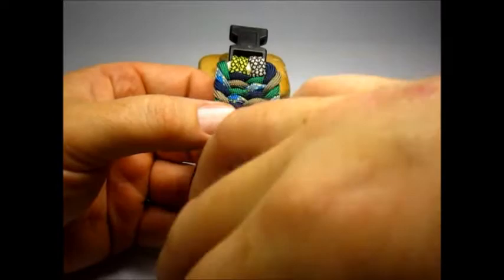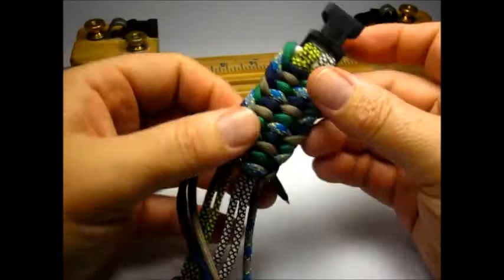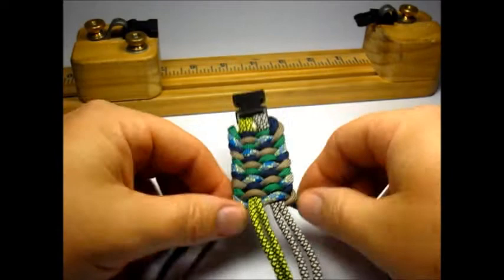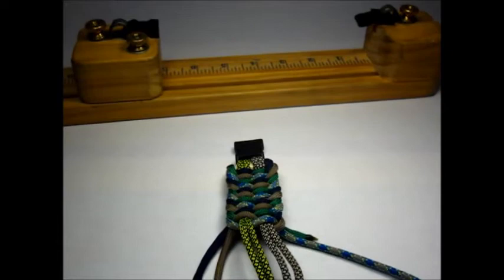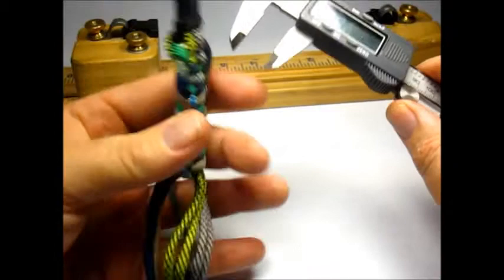So we're going to take this off the jig here. There's a couple things I need to know so I can make this. I need to know how thick it is and I need to know how much paracord I'm going to need. So for my thickness, I'm going to take my digital calipers here, and we're going to take a couple measurements at different spots.